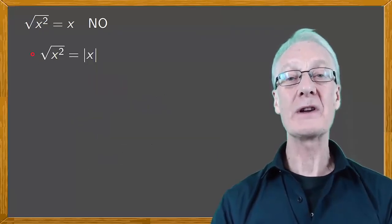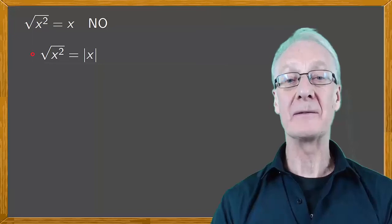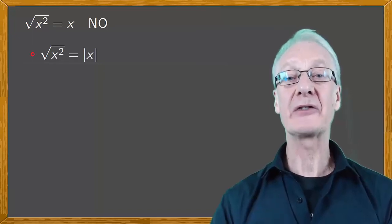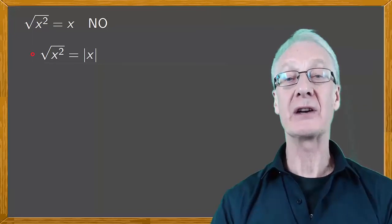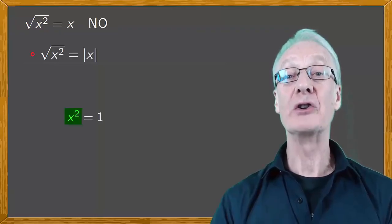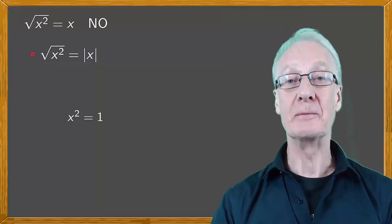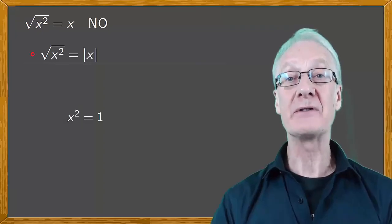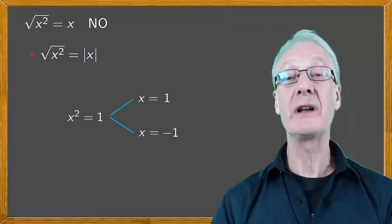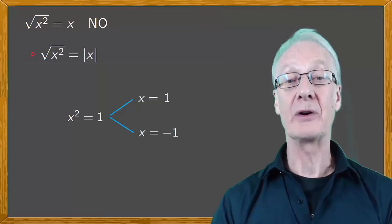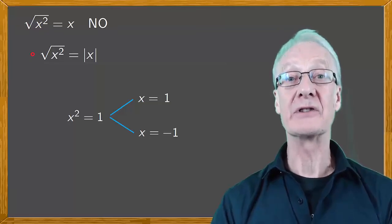By the way, the question we've been dealing with here is different than asking what are the solutions to the equation x squared equals 1. This is a polynomial of degree 2 and has two different solutions, x equals 1 and x equals minus 1. It's a completely different scenario.